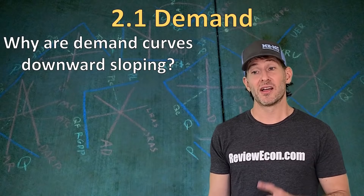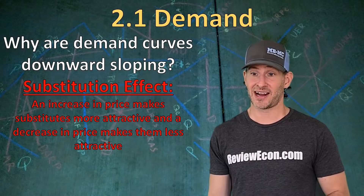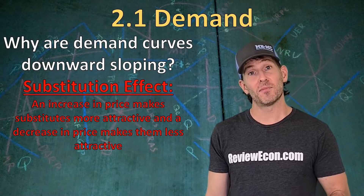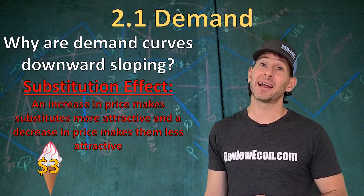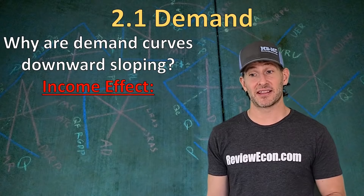The next thing is figuring out why demand curves slope downward. The first reason is called the substitution effect: an increase in price causes substitutes to look relatively more desirable, and a decrease in price makes the current good more attractive relative to alternatives. For example, when the price of ice cream goes up, I buy less ice cream partly because I'll buy more popsicles instead — that's the substitution effect.